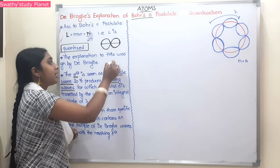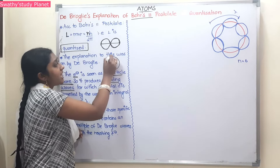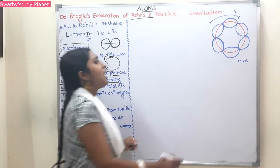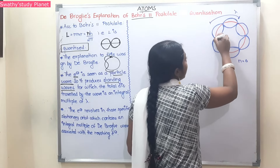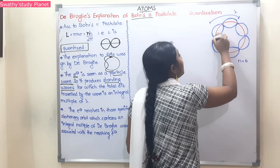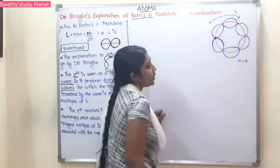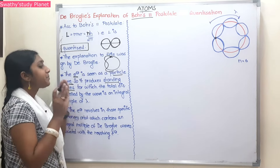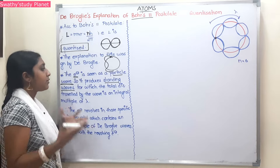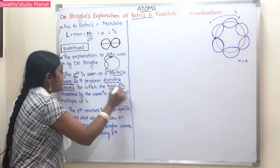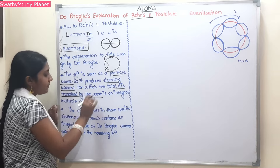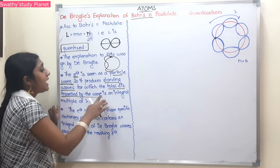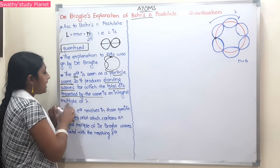The electron is in orbit producing standing waves. Suppose we go here, then we reflect back, and we come back — that is what we produce. Standing waves are produced by the electron revolving in its orbit. The key concept of standing waves: the total distance traveled by the wave is equal to an integral multiple of lambda.